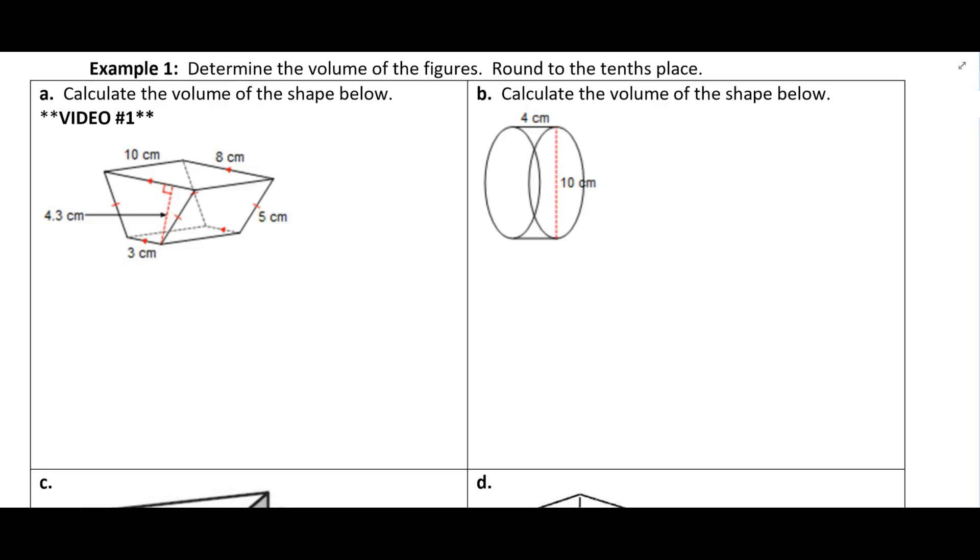All right, in this video we're going to look at example 1 part A in section 10.2. We're looking at the volume of prisms and cylinders.